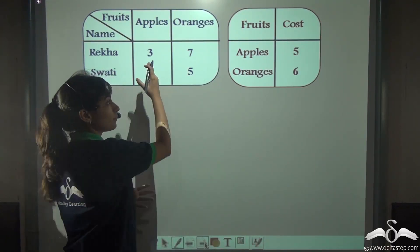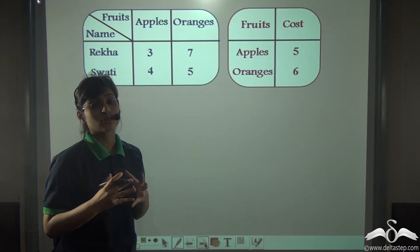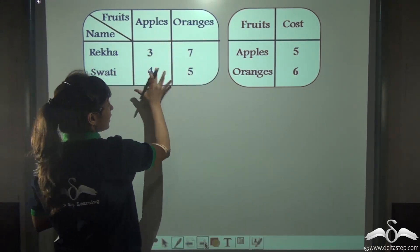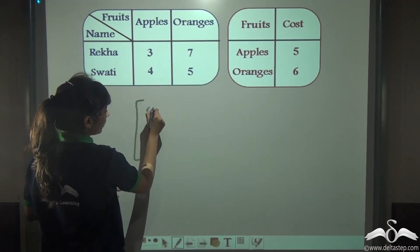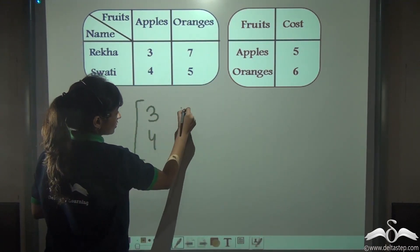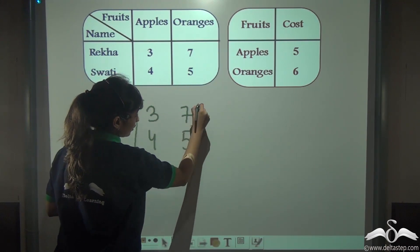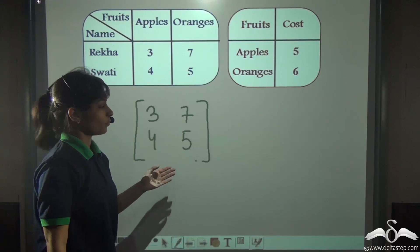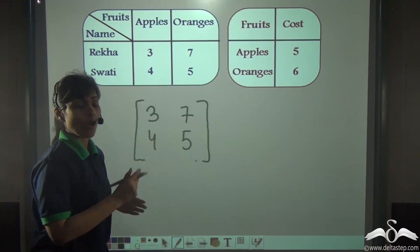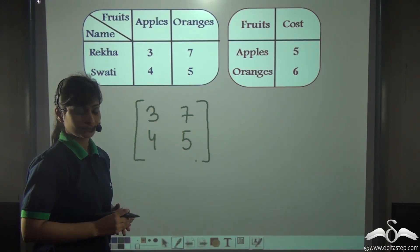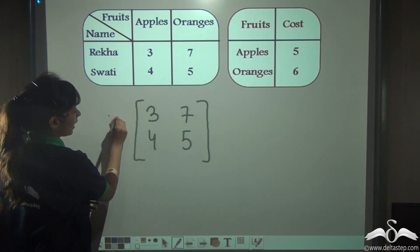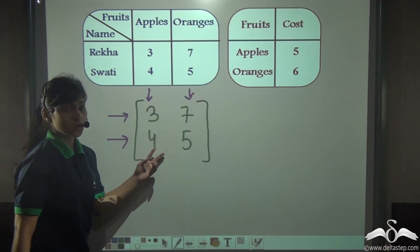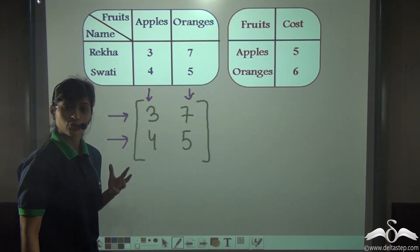What you will do is start multiplying. Let's do that in matrix form. First, let's write this data in a matrix form: 3, 7, 4, 5. You've already learnt how to write data in matrix form. Can you tell me what is the order of this matrix? You can see it has two rows and two columns, so this matrix is of the order two by two.